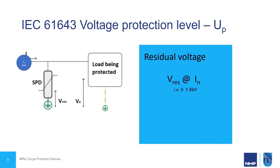UP is the voltage protection level. This essentially is the residual voltage that is left over an SPD when it's tested at its nominal current rating. So in our example, the SPD had an IN nominal current rating of 25 kA and a voltage protection level UP of less than or equal to 1.5 kV. So when the SPD sees a surge of 25 kA, you know that the residual voltage is going to be less than or equal to 1.5 kV. Essentially, this is the most important factor when looking at protecting our loads.